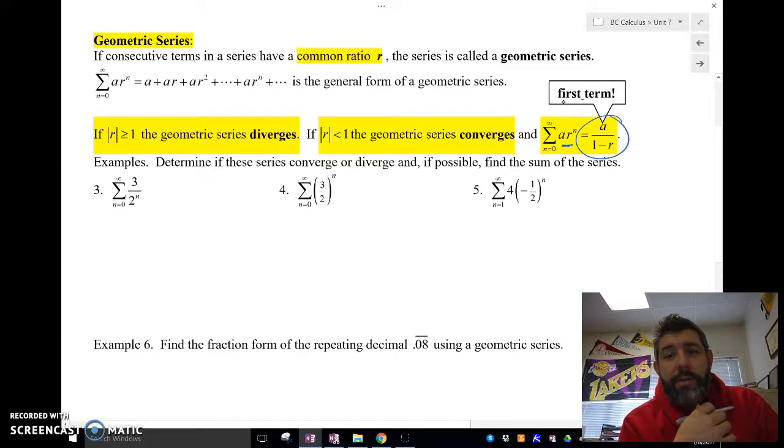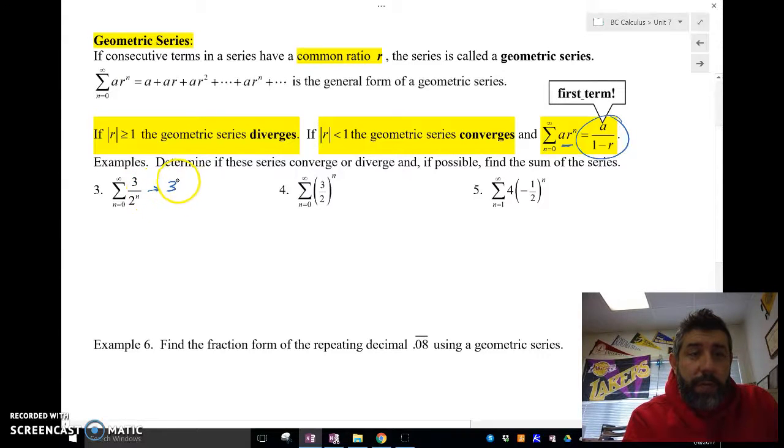Determine if these series converge or diverge, and if possible, find the sum of the series. So this right here is 3 times 1 half to the n. This is in the form of a geometric series where r is 1 half and a is 3. So notice here that r is 1 half, which the absolute value of r is in fact less than 1. So this geometric series is going to converge.